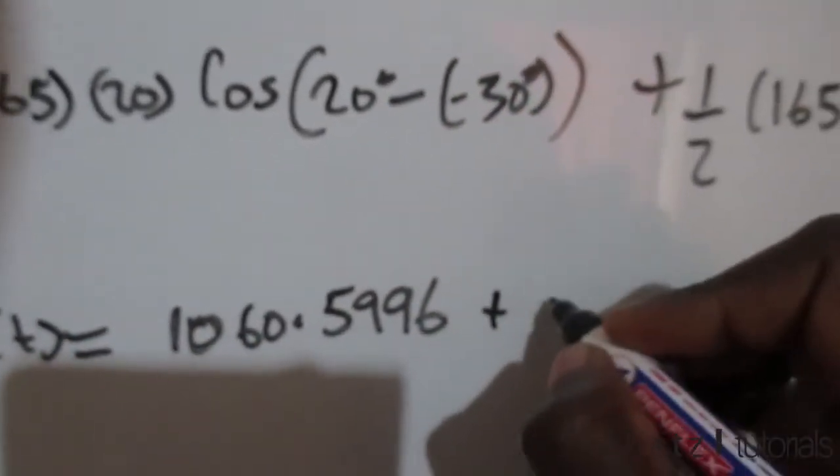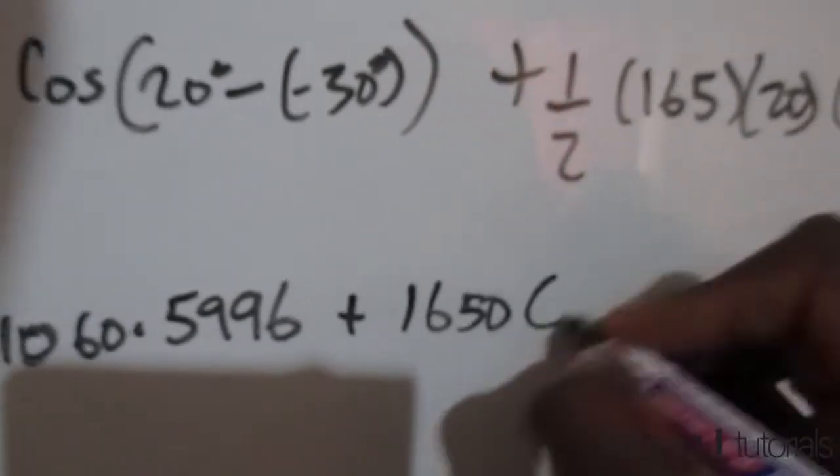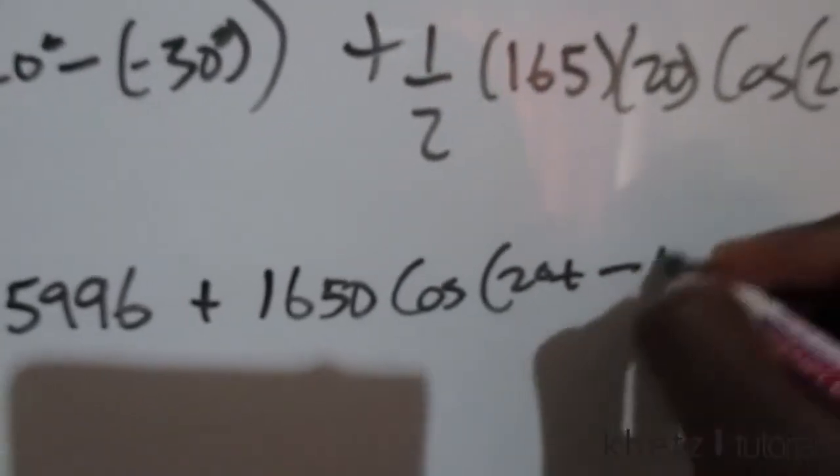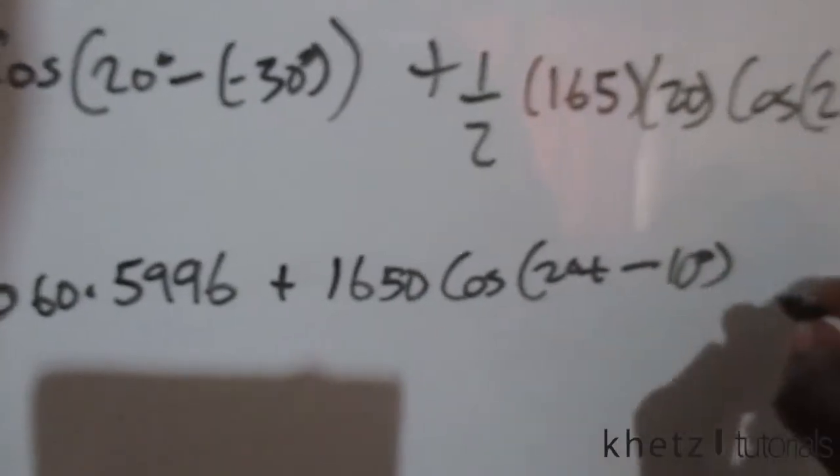You should actually get final values of p(t) which is the instantaneous power should be 1060.5996 added to 165√2 cosine (20t - 10°) and all of that is in watts.